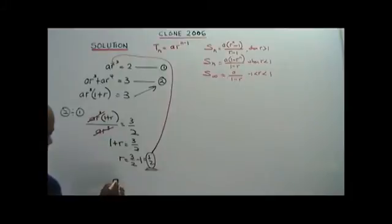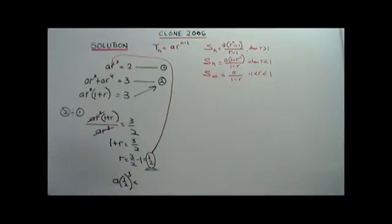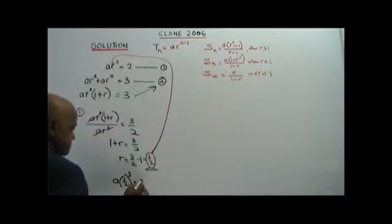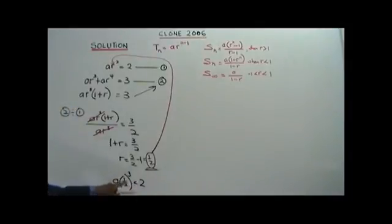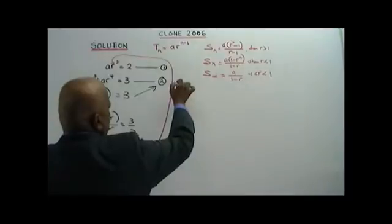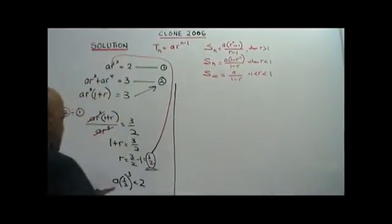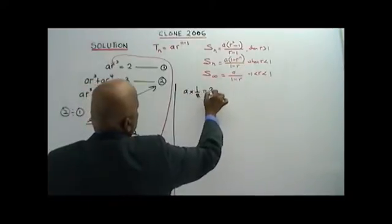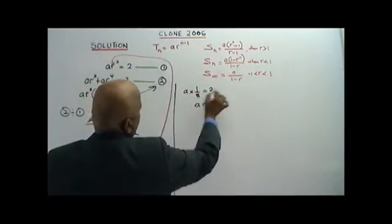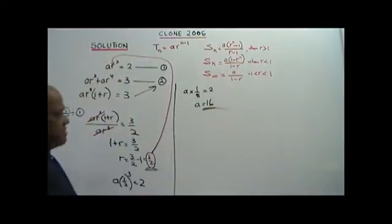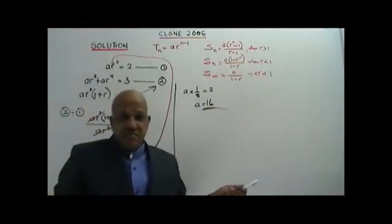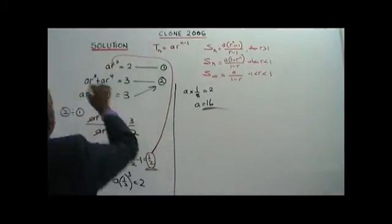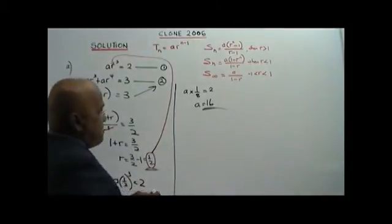Substituting R = 1/2 into Equation 1: A times (1/2) to the power of 3 equals 2. Therefore, A times 1 over 8 equals 2, so A equals 16. The first term is 16. That is the Part A answer.